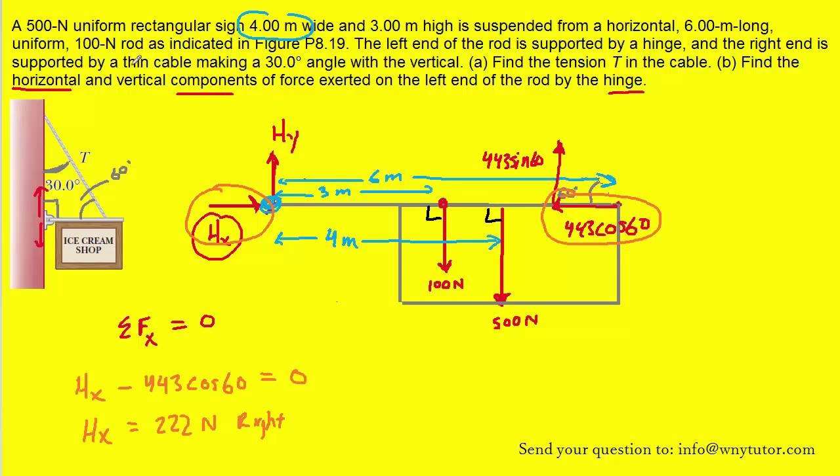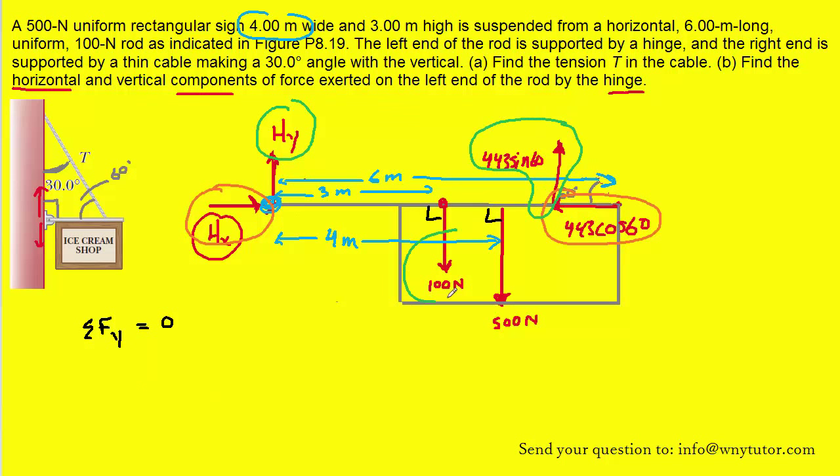Our last goal is to find the vertical component of the hinge force, which is Hy. To do that, we're going to use the idea that the sum of the forces in the y direction is equal to zero. We have several y forces: Hy, the y component of the tension, the downward weight of the rod, and the downward weight of the ice cream shop sign. Remember, the downward forces will be negative. You should be able to easily solve for Hy, which turns out to be about 217 newtons, and it's pointing upward as shown in the diagram.